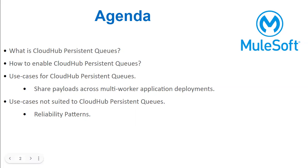CloudHub Persistent Queues should not be confused with traditional Mule Persistent Queues. While Mule Persistent VMQs were intended to be part of a reliability pattern solution, that was never the intention of CloudHub Persistent Queues. The strong recommendation is that CloudHub Persistent Queues should not be considered a feature to use when designing reliability patterns. It should also not be enabled when deploying on a single worker. If you want a true reliability pattern, use AnyPoint MQ, ActiveMQ, IBM MQ, or other equivalent JMS or AMQP brokers.